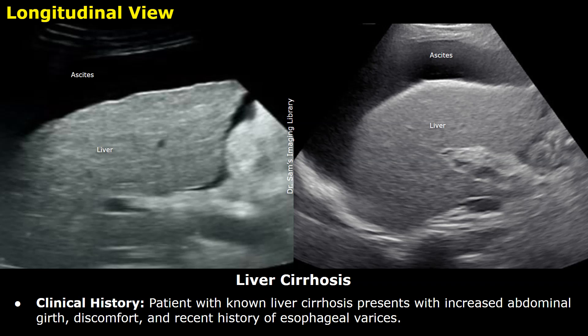Hello everyone, this is Dr. Sam, and this is an example of an ultrasound report of liver cirrhosis. You will learn how to write ultrasound reports regarding patients with liver cirrhosis. In this example, the clinical history is: patient with known liver cirrhosis presents with increased abdominal girth, discomfort, and recent history of esophageal varices.